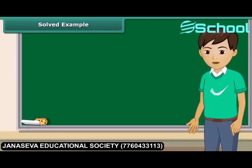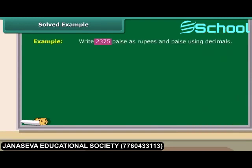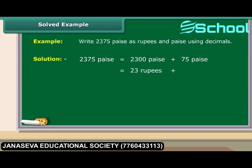Let us convert money expressed in paise into rupees and paise using decimals. Express 2375 paise in rupees and paise using decimals. 2375 paise equals 2300 paise plus 75 paise, which is the same as 23 rupees plus 75 paise.